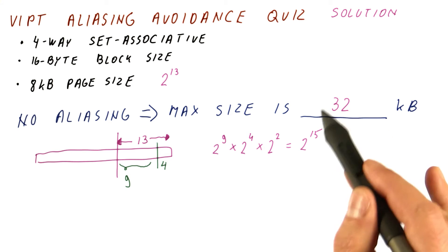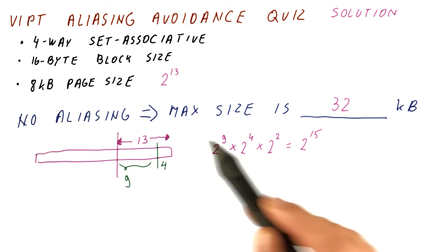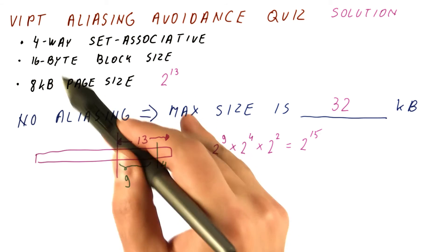So we cannot have a cache that is larger than 32 kilobytes, and yet it avoids aliasing with these parameters.